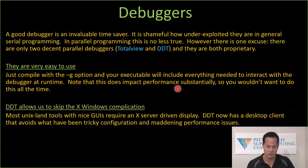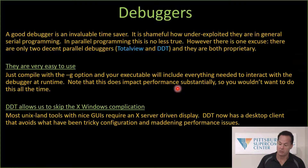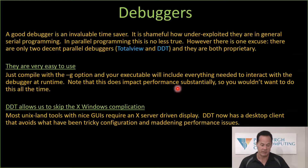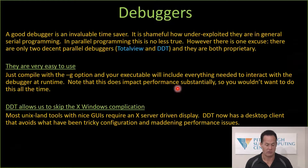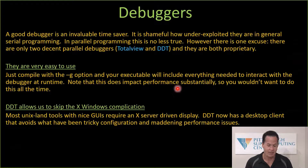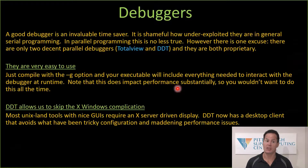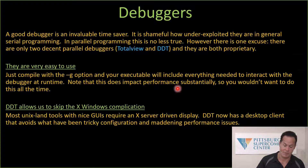We'll just quickly look at these, in particular debuggers. The good news is that debuggers are incredibly friendly, GUI-based, intuitive things to use, so you can throw out your printf code almost immediately. The bad news in parallel programming is that there are really only a couple of good debuggers, and they are both proprietary license products, and licenses are not cheap.